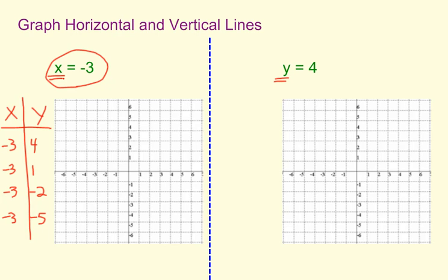So when we go to plot these points, we have negative 3, positive 4 - so we go to the left 3, up 4. We have negative 3, 1; negative 3, negative 2; and negative 3, negative 5. And what we see is that these points are all stacking up in this vertical line. And so x equals negative 3 will be a vertical line.